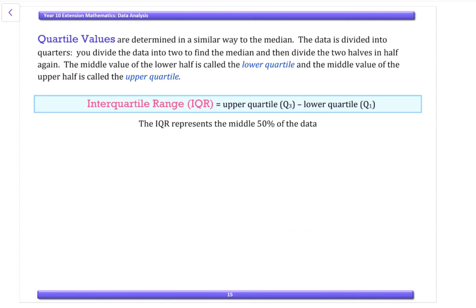Our quartile values are determined in a similar way to the median. The data is divided into quarters. You divide the data into two to find the median and then divide the two halves in half again. The middle value of the lower half is called the lower quartile or Q1 and the middle value of the upper half is called the upper quartile or Q3. The interquartile range or IQR is Q3 minus Q1. The IQR represents the middle 50% of the data.